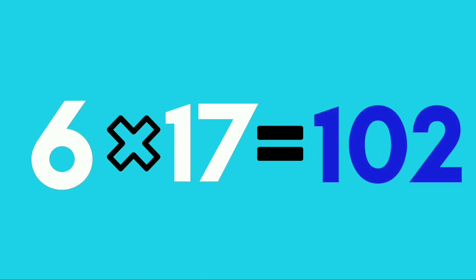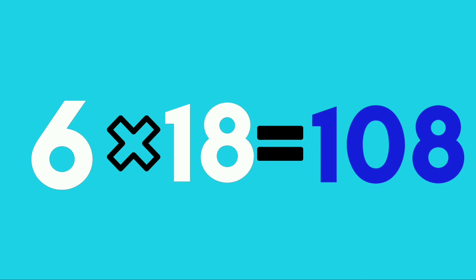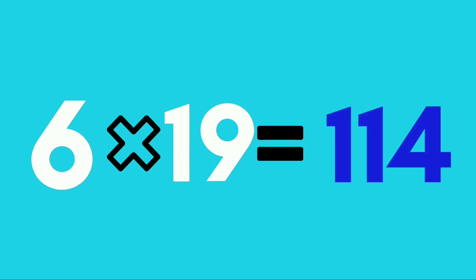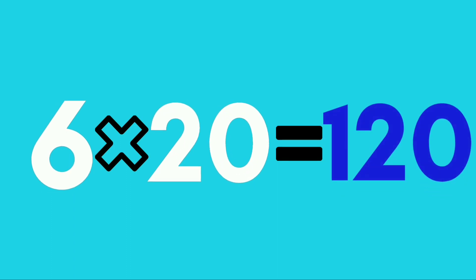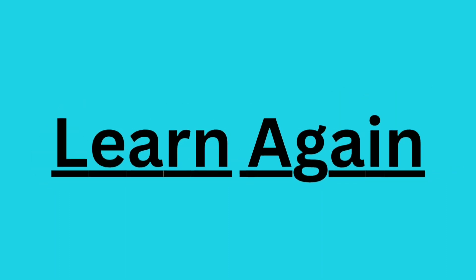Six seventeens are 102. Six eighteens are 108. Six nineteens are 114. Six twenties are 120. Learn again.